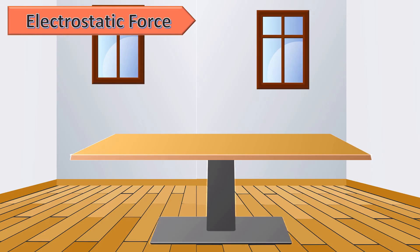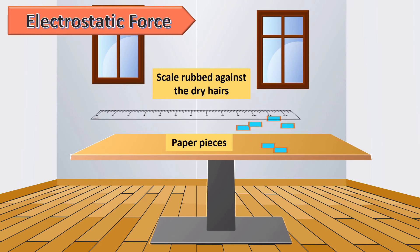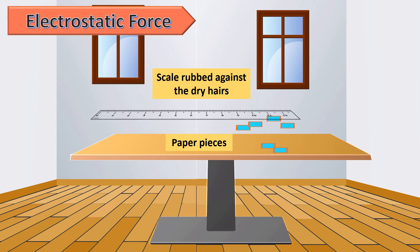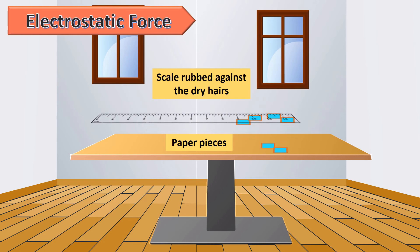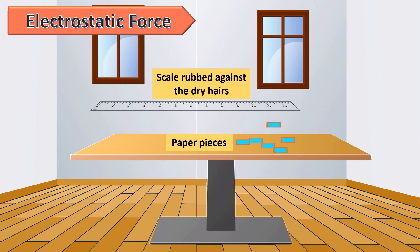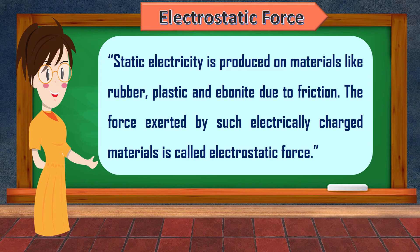Before studying electrostatic force, we will first see what is meant by electrostatic. Electrostatic is the study of electric charges which are at rest and the forces between electric charges. When you rub a plastic scale against your dry hair, paper pieces are attracted towards the plastic scale. This happens because friction between the hair and scale causes the scale to acquire an electric charge. Static electricity is produced on materials like rubber, plastic and ebonite due to friction. The force exerted by such electrically charged materials is called electrostatic force.